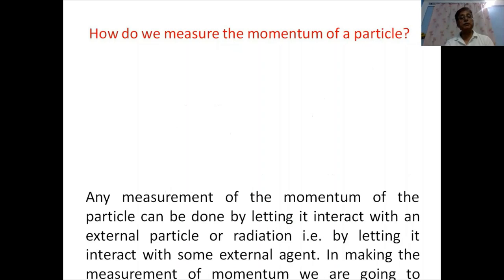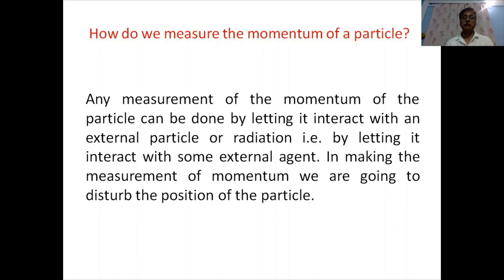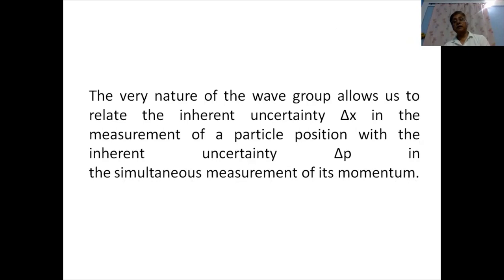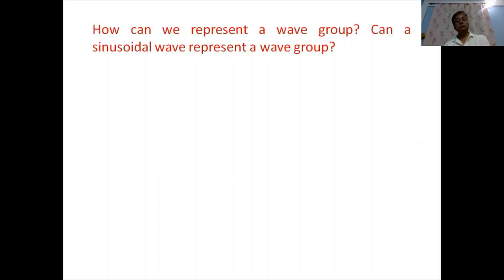The question is: how do we measure the momentum of a particle? The standard procedure is that any measurement of the momentum can be done by letting the particle interact with an external particle or radiation — that is, by letting it interact with some external agent. In making the measurement of momentum, we disturb the position of the particle. That is, simultaneously we are not able to measure momentum and position with accuracy. The very nature of the wave group allows us to relate the inherent uncertainty delta x in the measurement of position with the inherent uncertainty delta p in the simultaneous measurement of its momentum.